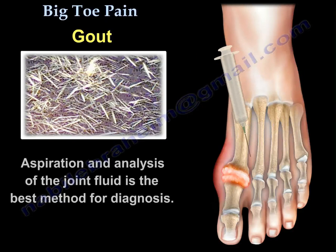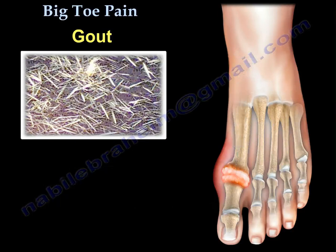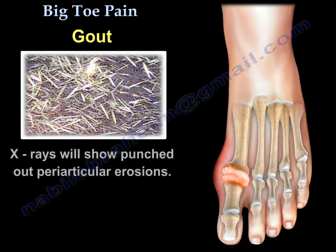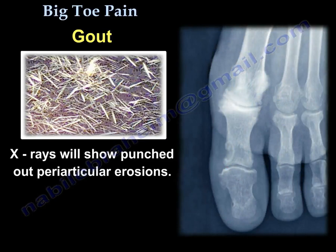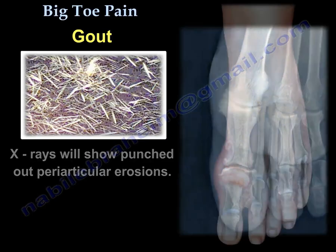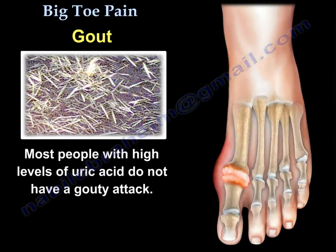Aspiration and analysis of the joint fluid is the best method for diagnosis. X-rays will show punched-out periarticular erosions. Most people with high levels of uric acid do not have a gouty attack.